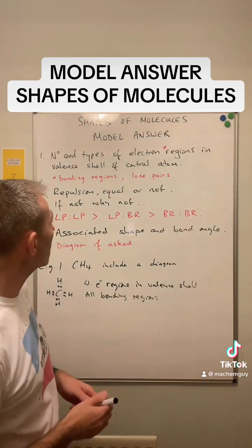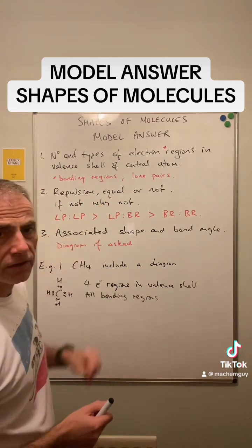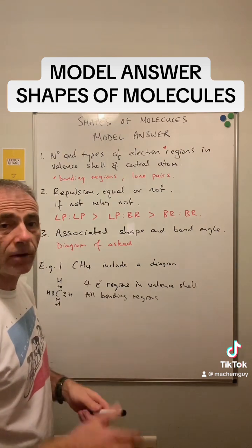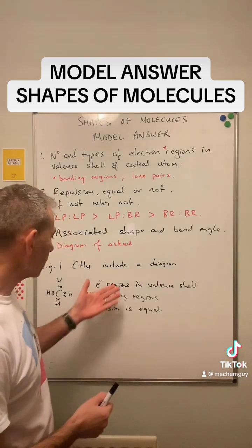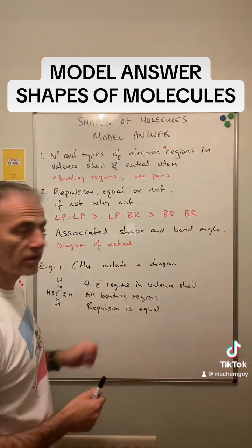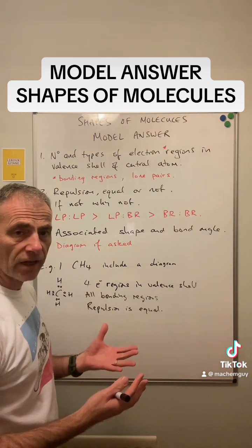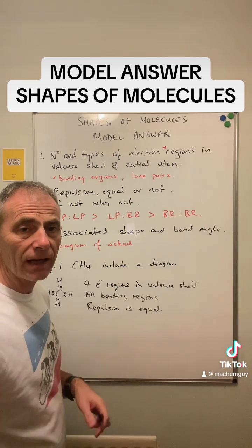So because there's no lone pairs to worry about, the repulsion statement is just repulsion is equal. So what's the associated shape and angle for four bonding regions? It's tetrahedral shape and 109.5 degree angle.